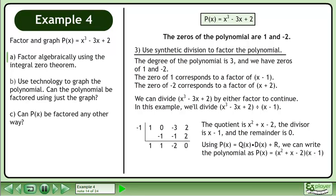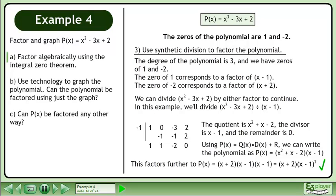Using p equals q times d of x plus r, we can write the polynomial as p equals x squared plus x minus 2 times x minus 1. This factors further to p equals x plus 2 times x minus 1 times x minus 1. Combining identical factors gives x plus 2 times x minus 1 squared.